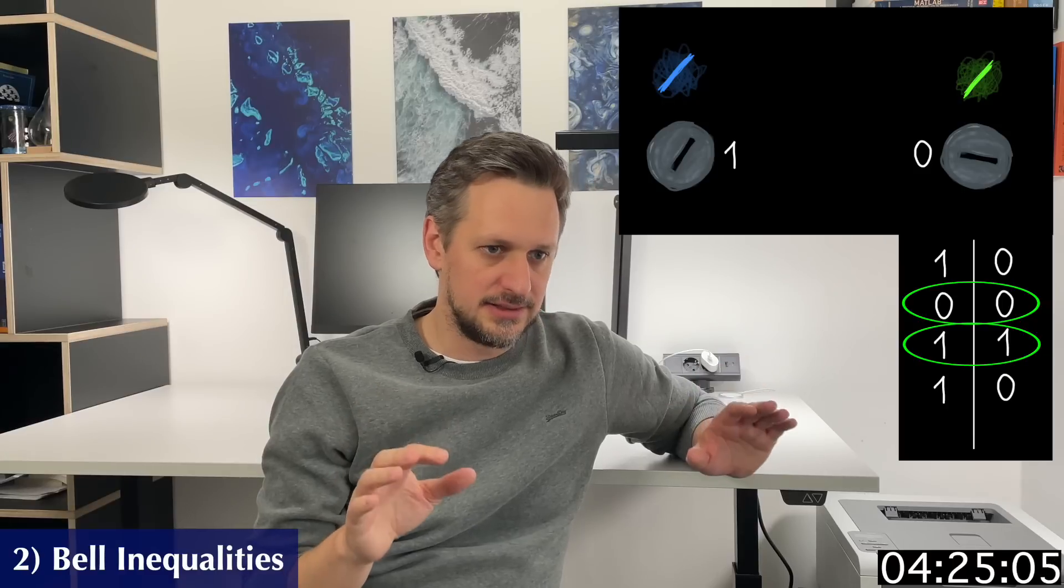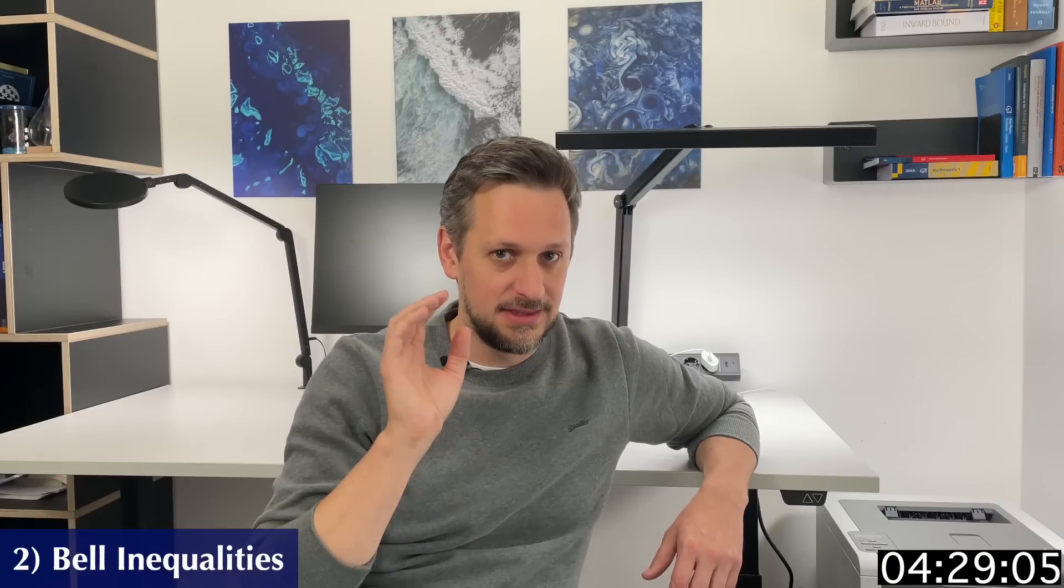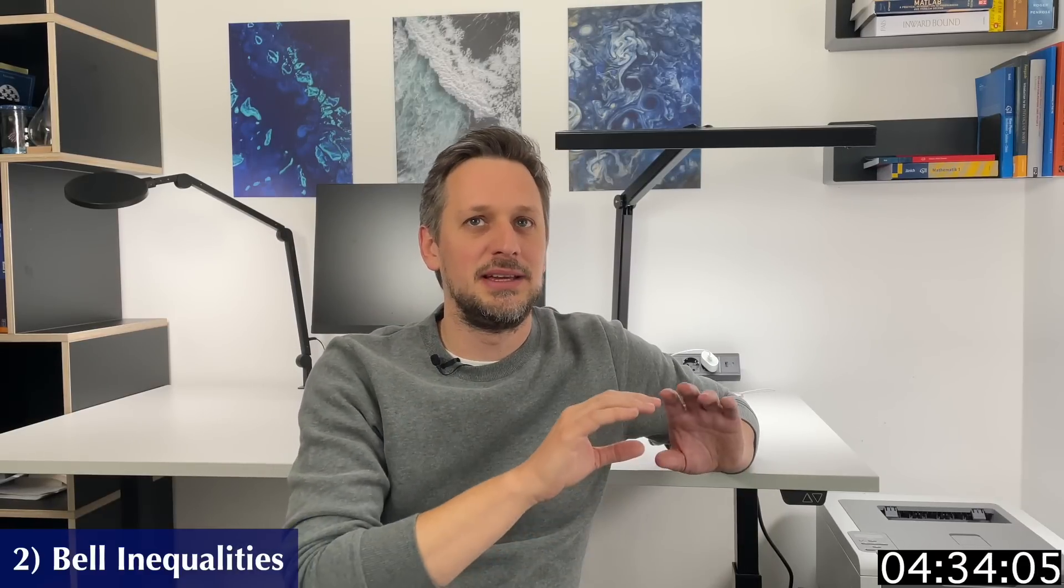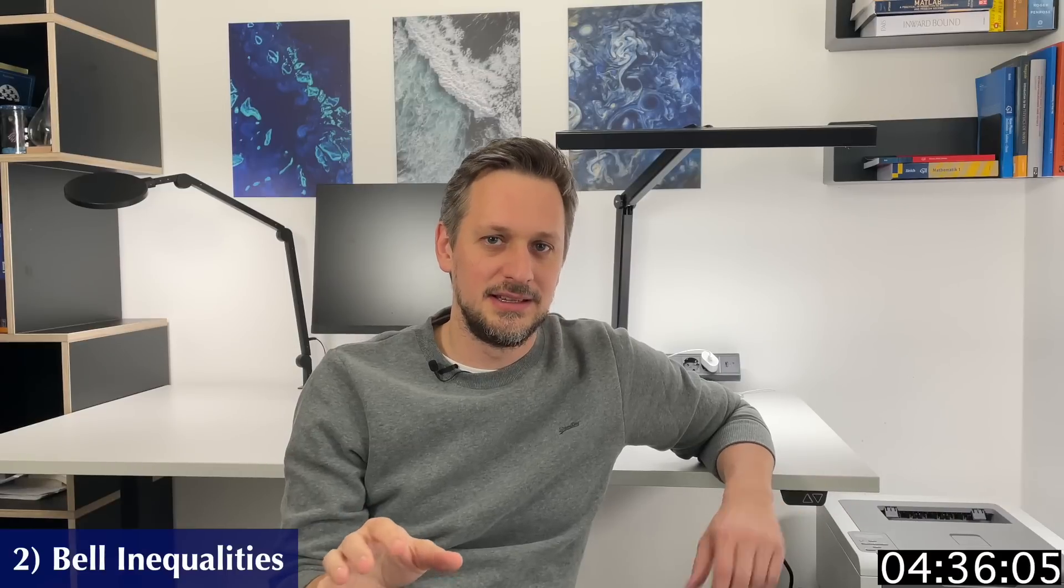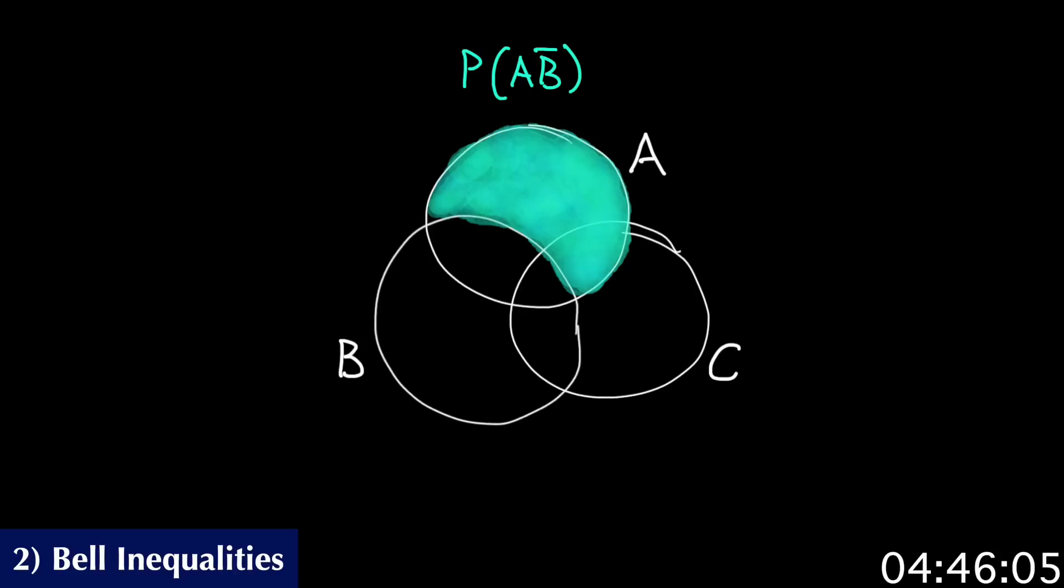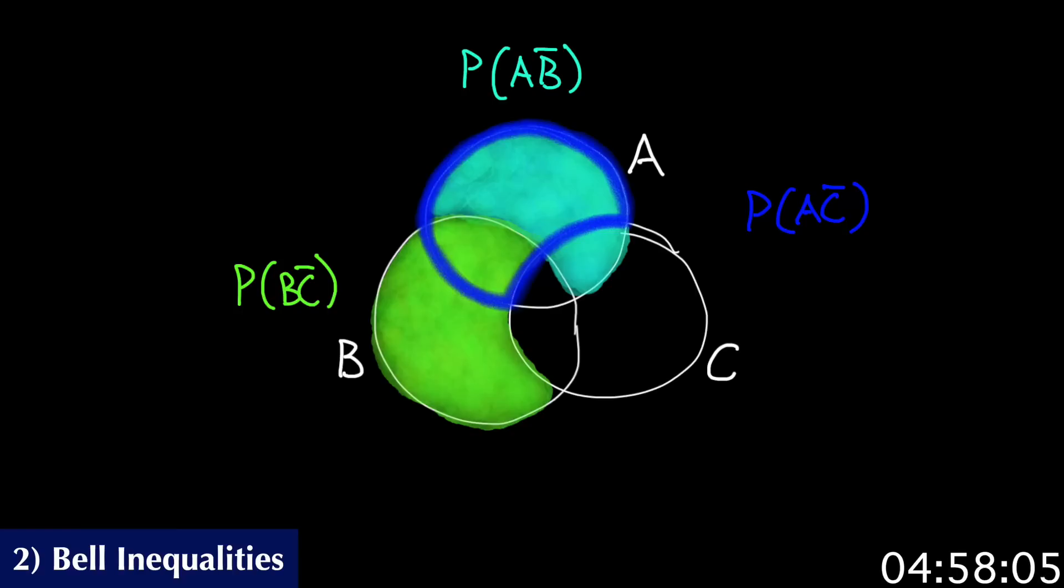If you assume local realism, any correlation must be random, but it must adhere to the rules of probability. And this means that you can formulate a number of inequalities that must always hold. For example, you have three different outcomes A, B and C. The probability for A and not B would then be this area. The probability for B and not C would be this area. And the probability for A and not C would be this area.